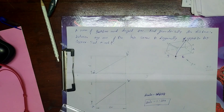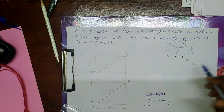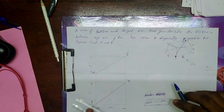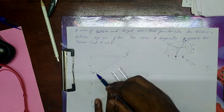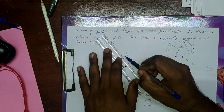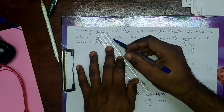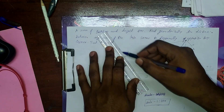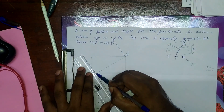From the top corner, we can find out the true length by the trapezoidal method or by the line rotation method. Here I am using the trapezoidal method. I am drawing perpendicular lines from A dash and B dash. A dash B dash is a perpendicular line, so I am using the left corner.